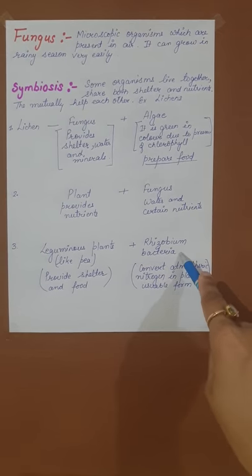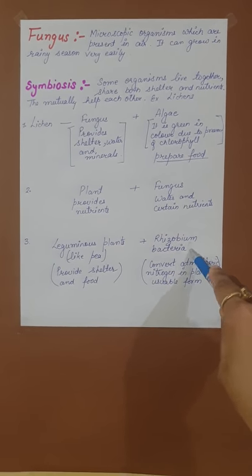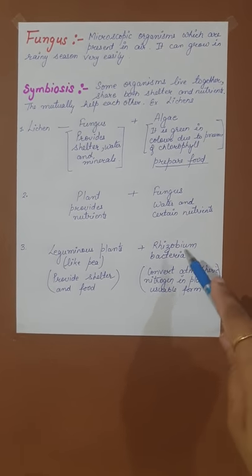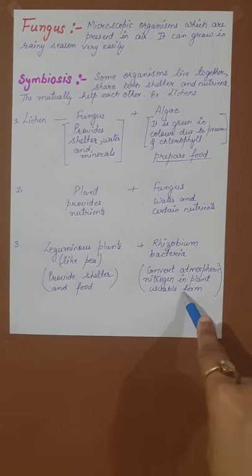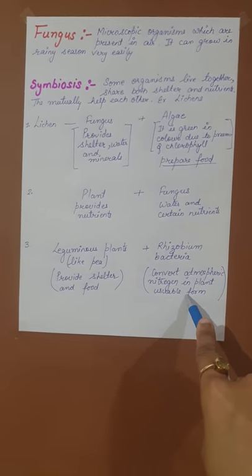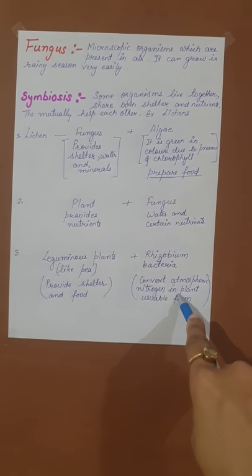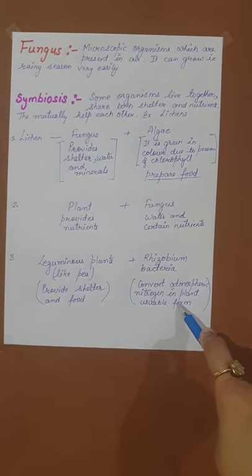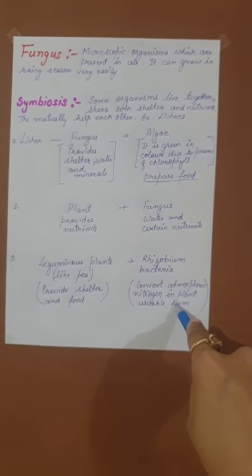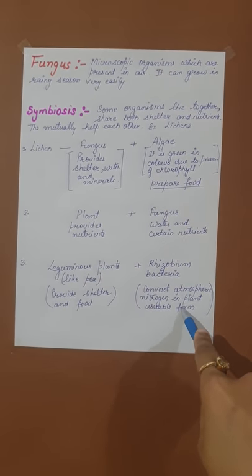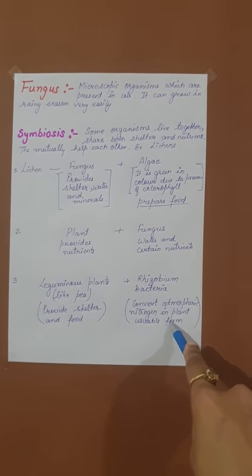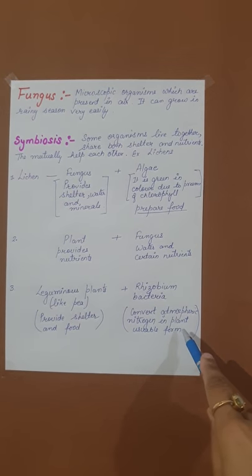Rhizobium bacteria's job is nitrogen fixation from the atmosphere. Leguminous plants provide shelter and food. In return, rhizobium bacteria provides nitrogen from the atmosphere. With this, all heterotrophic modes of nutrition are complete.